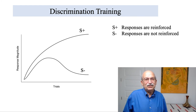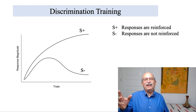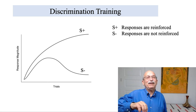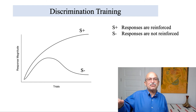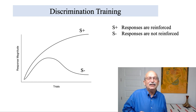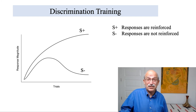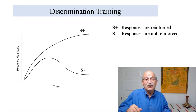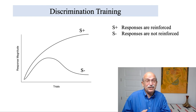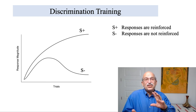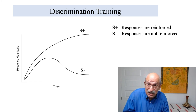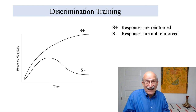The slide shows the level of conditioned responding in the presence of two different stimuli. S-plus is the stimulus in the presence of which behavior is reinforced, or in a Pavlovian procedure, the stimulus paired with the US. S-minus is the stimulus in the presence of which behavior is not reinforced, or in Pavlovian conditioning, not followed by the US. With discrimination training, you learn to respond in the presence of S-plus and suppress your behavior in the presence of S-minus — and it is an active suppression.